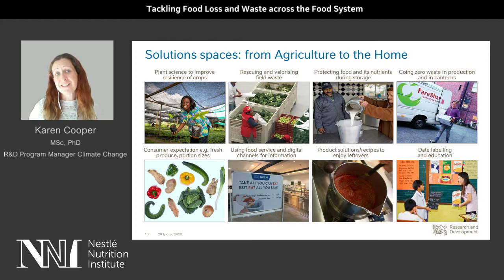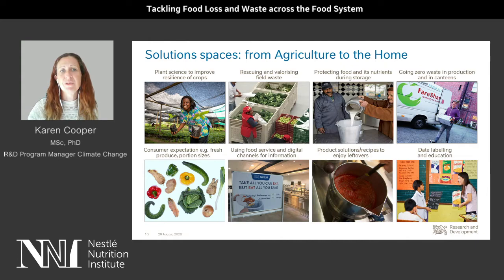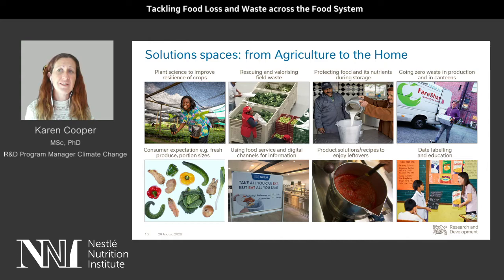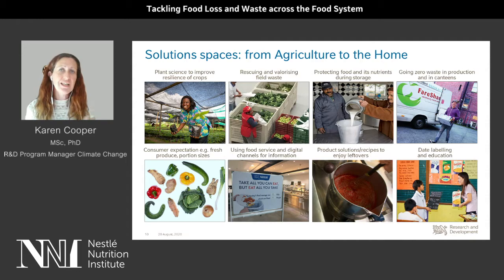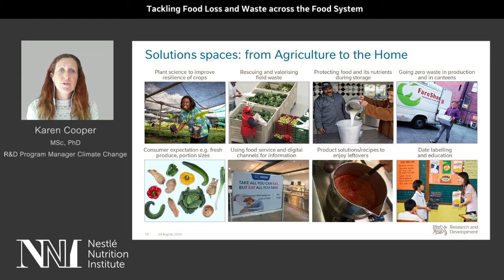Now we move on to solution spaces — this is just a selection, as the normal solutions are far-reaching and broad, and many are areas where nutritionists and dietitians can make a difference. We can help farmers reduce their losses with the use of plant science to improve the resilience of crops so that more make it to harvest time. This is important not just for cash cropping but also for the foods that smallholders grow for their own families, helping reduce losses and supporting food and nutrition security. We can also support organizations that rescue field losses — here you see an image from a food bank I visited in Mexico where they collect losses from the fields and ensure the nutrition reaches the farmers who need it.